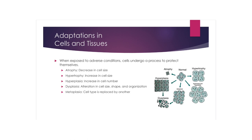Hypertrophy is the opposite — an increase in size of cells due to the synthesis of more subcellular components. When the cell needs to be used more, the size of that cell will increase, not the number. Atrophy and hypertrophy are strictly related to the size of the cell.